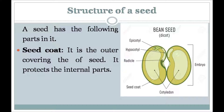Structure of a seed: Seeds mainly consist of three parts — seed coat, cotyledons and embryo. The first part is the seed coat. The seed coat is a hard outer covering of the seed which protects the embryo from harsh conditions and saves the seeds from drying out. For example, almonds are seeds protected by a seed coat — when we crack it open, the fresh almond comes out. The seed coat has a tiny opening called the hilum, which absorbs water.